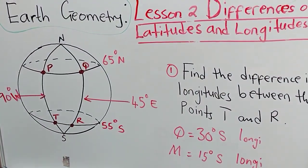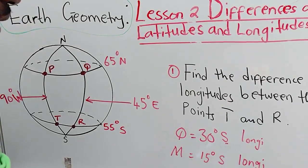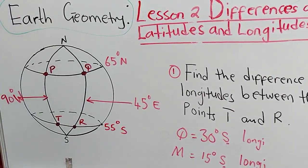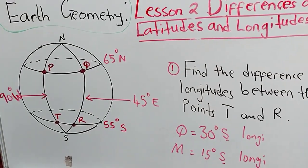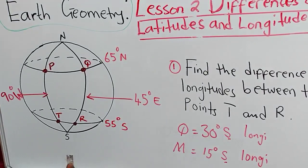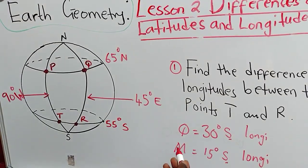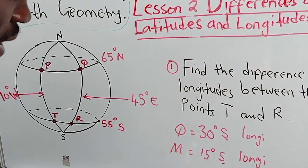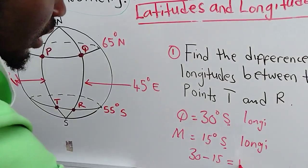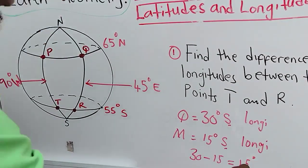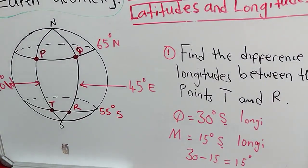These two points are lying on the same Greenwich meridian side. So what are you supposed to do? Remember, these are longitudes. How can you find the difference in longitudes between point Q and M? It's very simple: if the longitudes are lying on the same side of the Greenwich meridian, you subtract. So the difference between Q and M is 30 minus 15, which gives us 15 degrees. That is our answer — we have found the difference in longitudes between point Q and M.